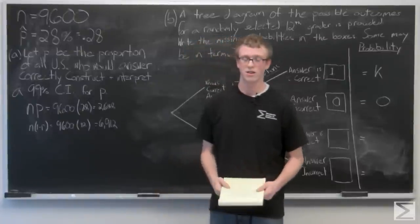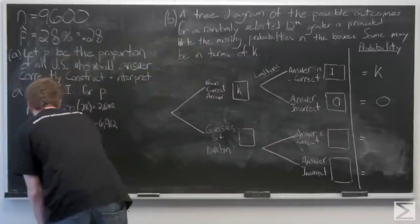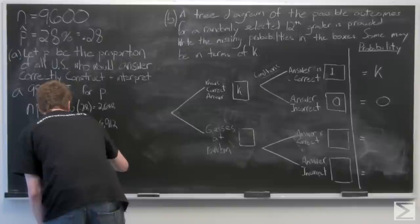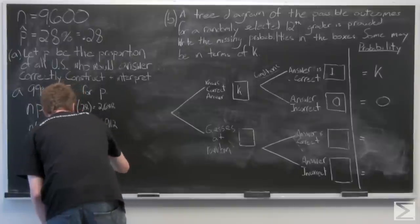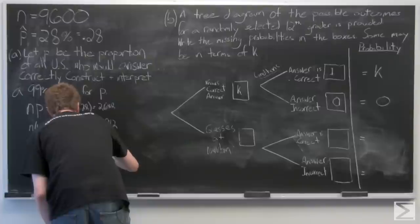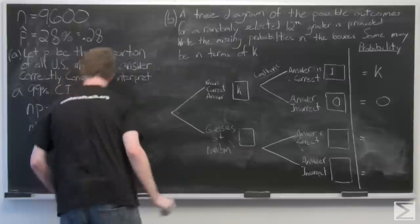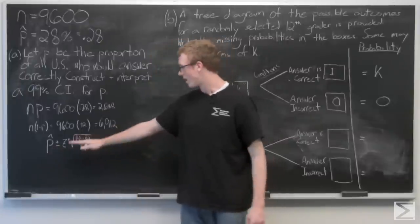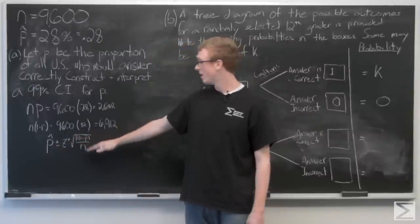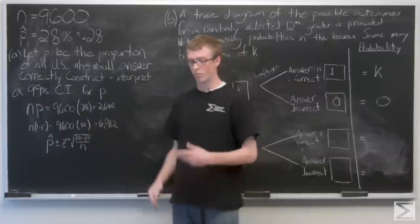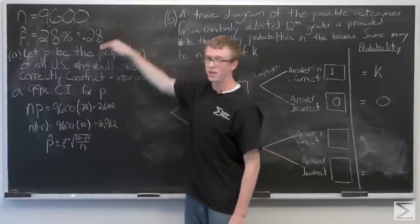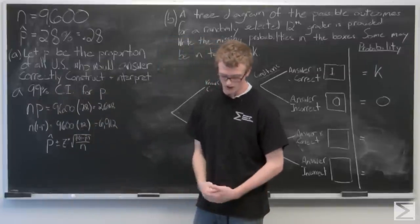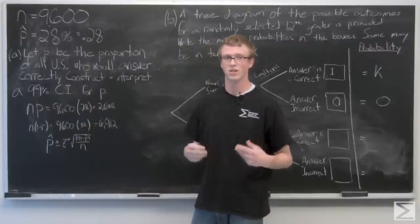We can go ahead and construct this confidence interval. The interval formula is P-hat plus or minus Z-star times the square root of P-hat times (1 minus P-hat) all over N. We're going to plug in our values for N and P. Since we're constructing a 99% confidence interval, our Z-star is going to be 2.576 and we carry out this calculation.